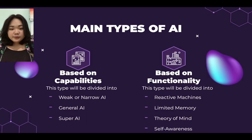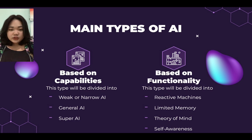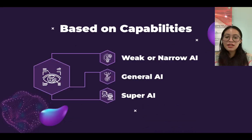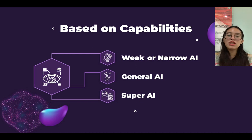There are two main types of AI. The first is based on capabilities, and this type is divided into weak or narrow AI, general AI, and super AI. The second is based on functionality, and this type is divided into reactive machines, limited memory, theory of mind, and self-awareness.